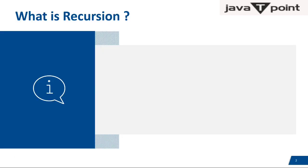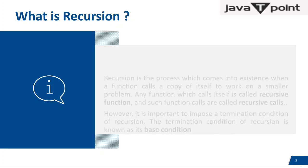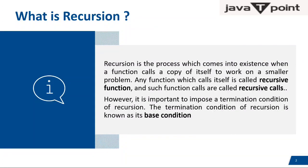So the question comes: what is recursion? Recursion is a process which comes into existence when a function calls a copy of itself to work on a smaller problem. When a function calls its copy of itself — now when a function is calling, it creates a copy of itself.